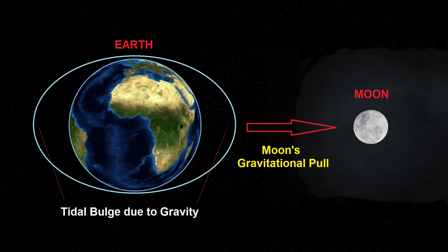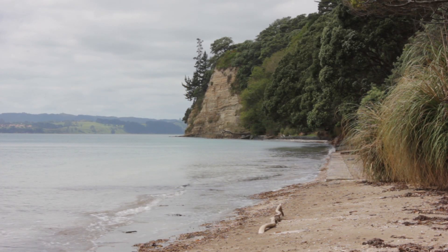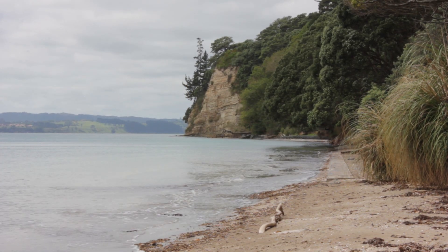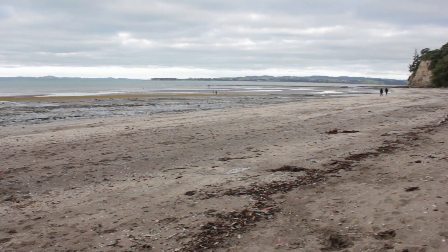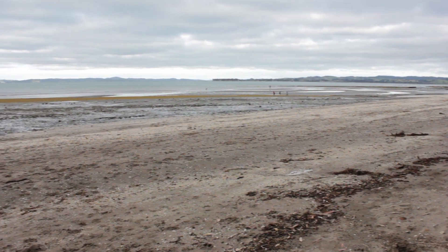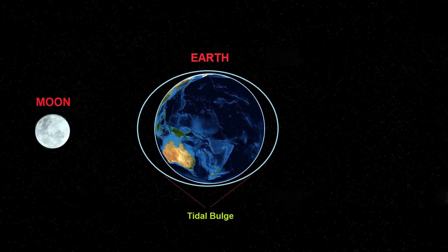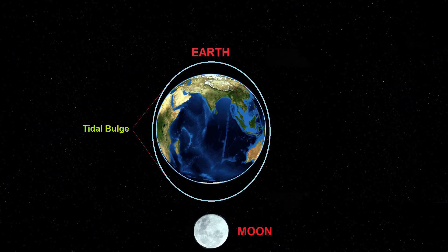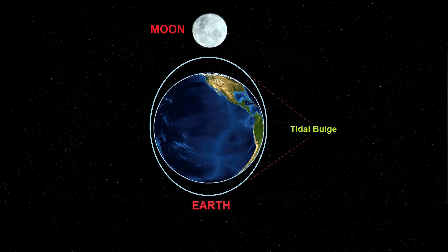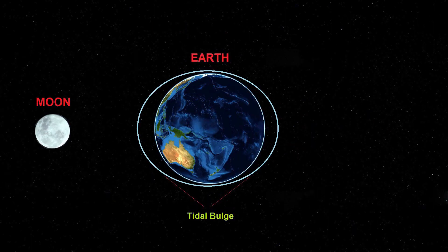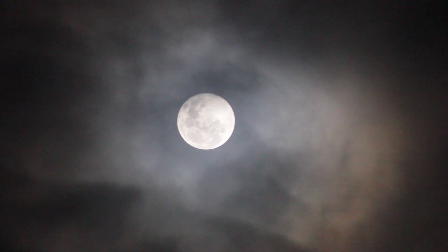The gravitational pull of the Sun and Moon creates a bulge in the oceans. The areas of the Earth where the bulging occurs experience a high tide, and the other areas experience low tide. While the Earth rotates on its axis, the Moon moves in the same direction around its orbit, turning the lunar tidal bulge as it goes.